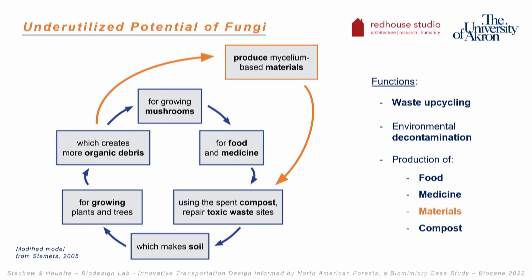With those materials, there's also an existing model developed by Paul Stamets — a really famous fungi researcher — who has been looking at fungi for bioremediation. We're trying to integrate the production of materials into his model. In his model, you grow mushrooms for food and medicine; at the same time you use the same spent compost and bioremediating species to repair toxic waste; those make soil for growing plants and trees, creating organic debris which you use for growing the mushrooms. We're trying to integrate the production of mycelium-based materials into this cycle so you can use both the myceliated substrate and the fruiting bodies.